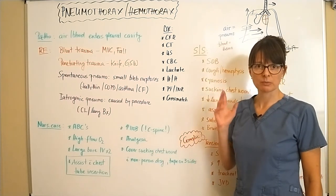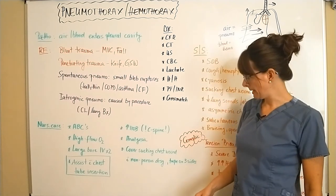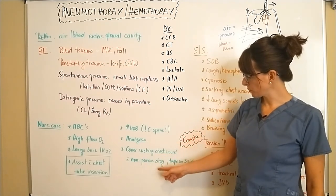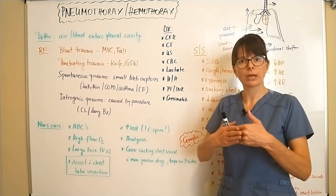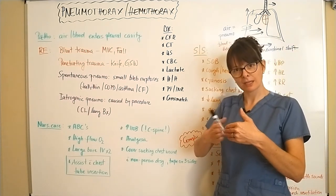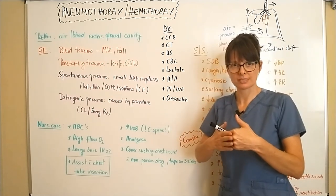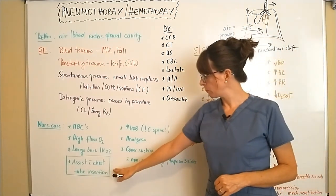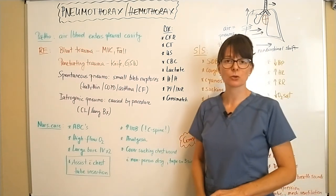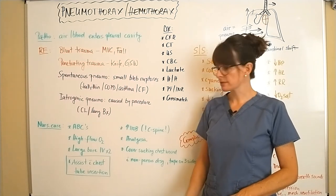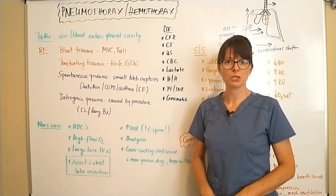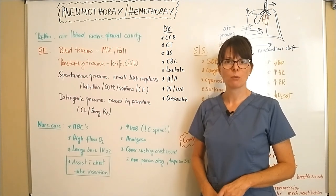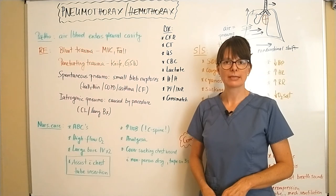The patient will need analgesia due to significant trauma and pain. If there is a sucking chest wound, cover it with a non-porous dressing taped on three sides to create a one-way valve that lets air escape but prevents air from being sucked back in, allowing passive deflation — this is a temporary solution until a chest tube is inserted. For chest tube management, please watch the separate video on chest tube care here on Nursing School Explained.